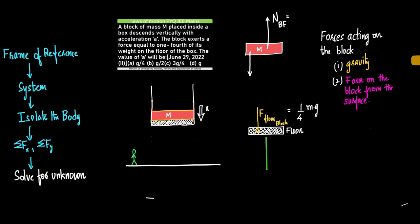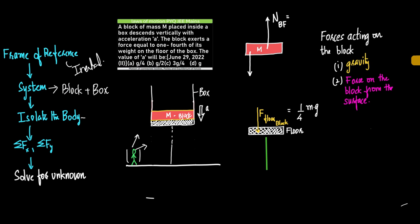For our reference, I will choose an inertial frame — that is the non-accelerating frame — so the observer is standing here watching this phenomenon. The system is actually the block and the box. M represents the block and this represents the overall box. I will isolate both bodies — the block and the box, specifically the floor of the box.